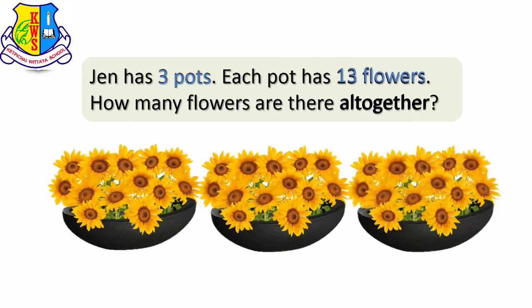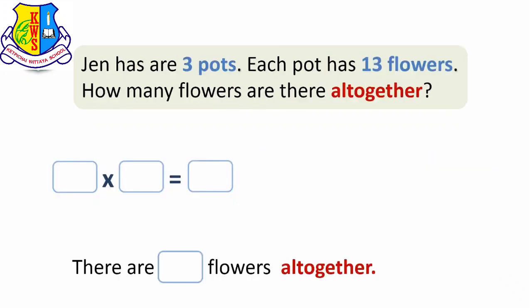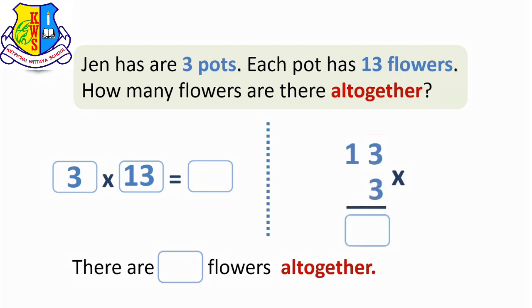The question is, how many flowers are there all together? We write 3 times 13 is equal to blank. Multiply vertically: 13 times 3 is equal to blank. 3 times 3 makes 9.